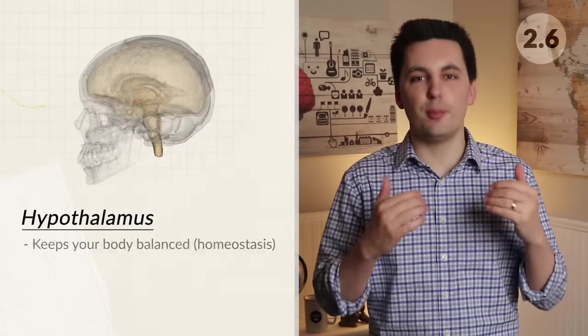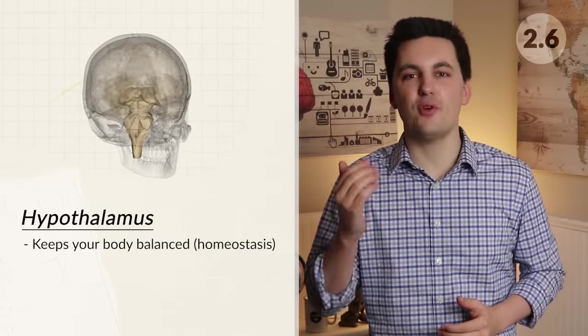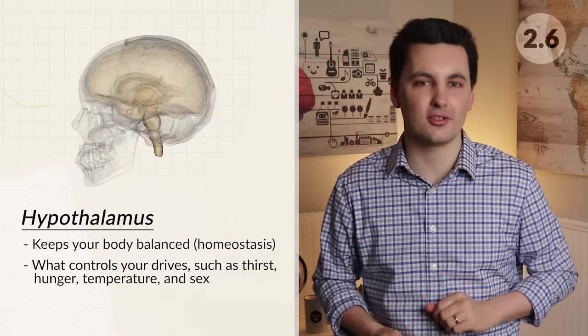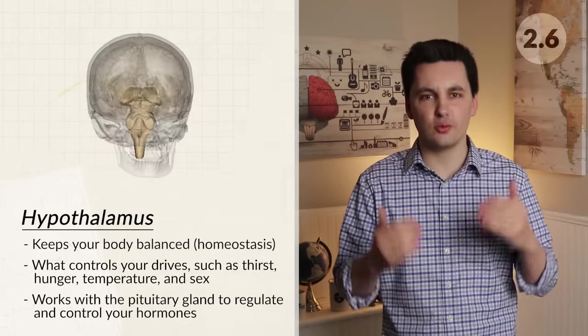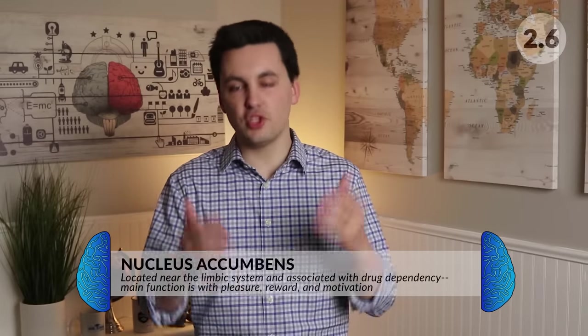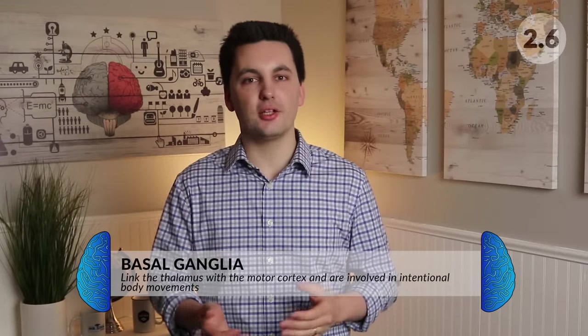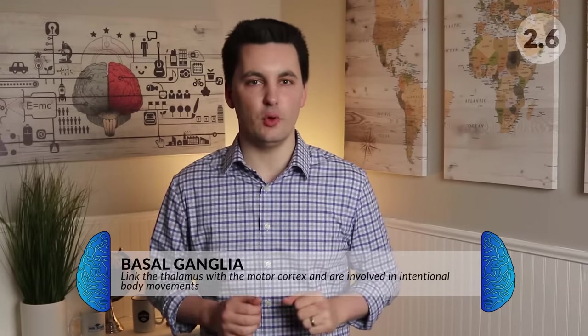The hypothalamus keeps your body balanced, allowing for homeostasis, and controls your drives such as thirst, hunger, temperature, and sex. It also works with the pituitary gland to regulate and control your hormones. The nucleus accumbens is located near the limbic system and is associated with drug dependency — its main function is pleasure, reward, and motivation. Lastly, we have the basal ganglia — these neuron cell bodies are involved in intentional body movement and link the thalamus with the motor cortex. If this area is damaged it could lead to Parkinson's, cerebral palsy, or Huntington's disease.